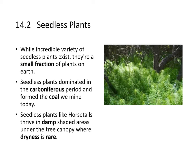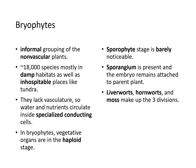Seedless plants are incredibly diverse, though only a small fraction of plants today. Seedless plants dominated the Carboniferous period and formed the coal we mine today. Seedless plants like horsetail thrive in damp, shaded areas like under the tree canopy where dryness is rare. The bryophytes are an informal grouping of non-vascular plants with about 18,000 species, mostly in damp habitats as well as some inhospitable places like the tundra.